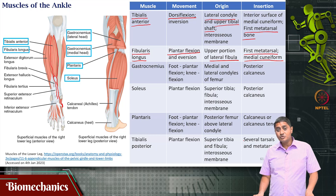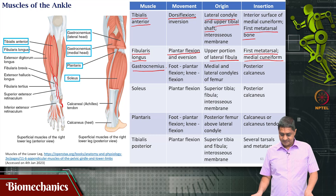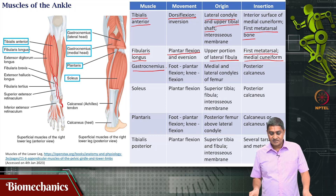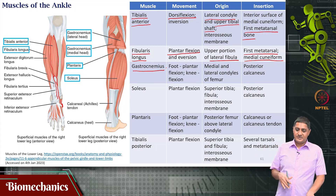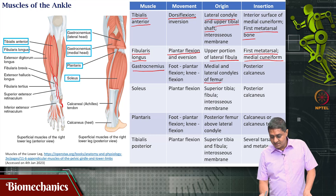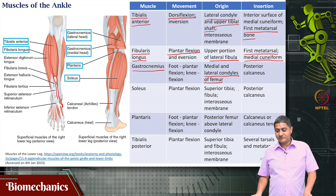The most superficial muscle at the back is the gastrocnemius. Its function is plantar flexion — when it contracts, it pushes the toes down and lifts the body up. It originates at the medial and lateral condyles of the femur — so it originates at the lower part of the thigh — and attaches at the posterior part of the calcaneus bone.